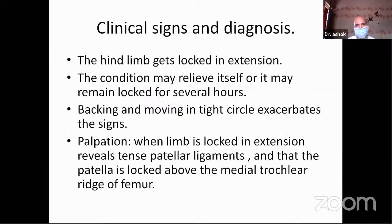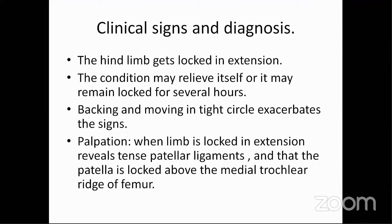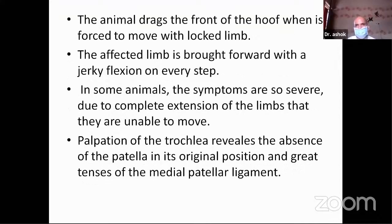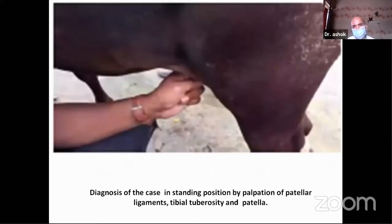Regarding clinical signs and diagnosis: the hind limb gets locked in extension. The condition may relieve itself or may remain locked for several hours. Backing and moving in a tight circle can elicit the condition. Palpation when the limb is locked in extension reveals tense patellar ligaments and the patella locked above the medial trochlear ridge of the femur. The animal drags the front of the hoof when forced to move, and the affected limb is brought forward with a jerky flexion on every step. In some animals, symptoms are so severe due to complete extension of the limb that they are unable to move. This picture shows how to diagnose the condition in the standing position by palpation of the patellar ligaments, tibial tuberosity, and the patella.